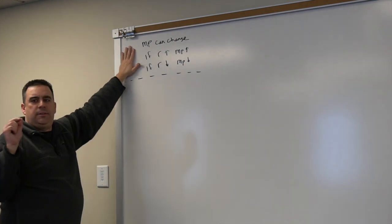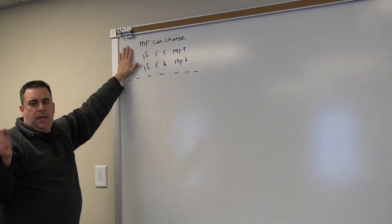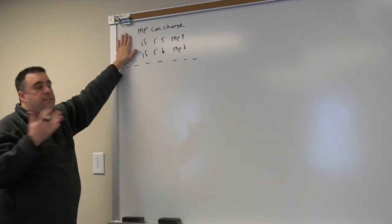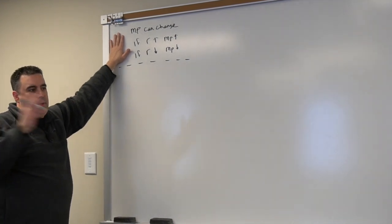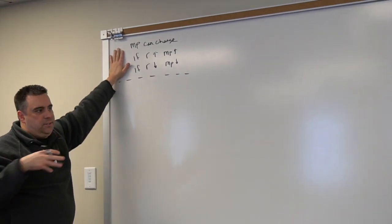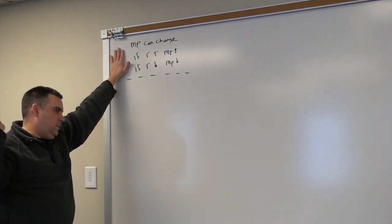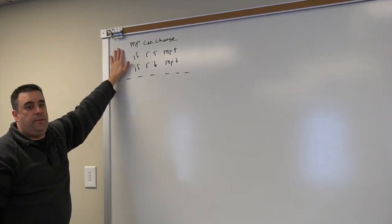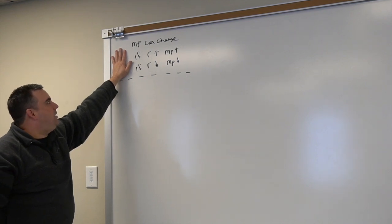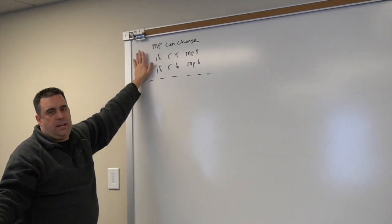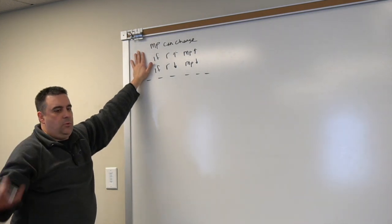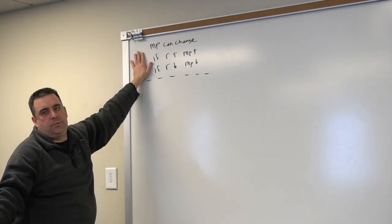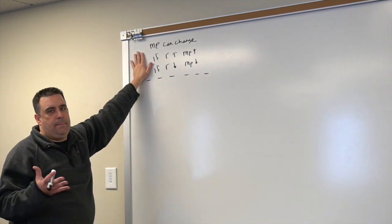There are a couple of other elements to the interest rate that we need to address. The Federal Reserve does take these into account as part of their target interest rate, so it still comes down to the Federal Reserve changing the MP function. But our textbook writes it out as a math equation, so I think we should look at it that way.